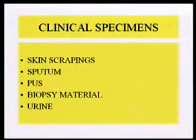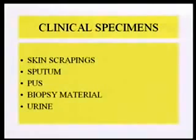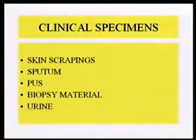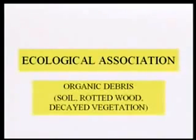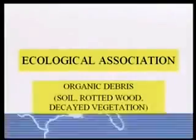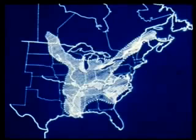The material you send to the lab includes skin scrapings, sputum, biopsy material, and urine — because the organism can infect the prostate, so urine cultures are important to remember. The ecological association has not been 100% identified, but it's mostly organic debris; it's only been isolated from nature about eight or ten times. It's found in soil, rotted wood, and decayed vegetation, and it's a disease of the eastern United States.